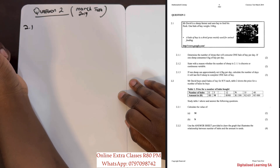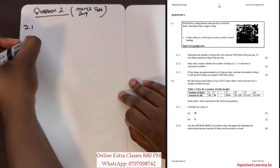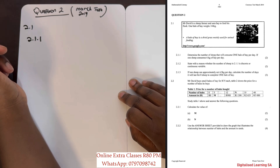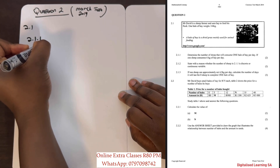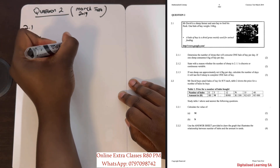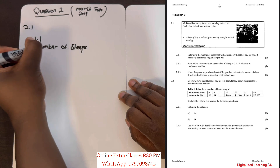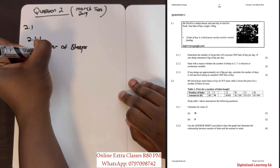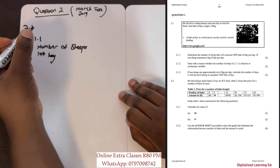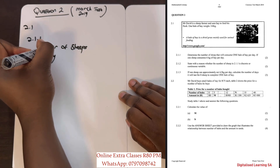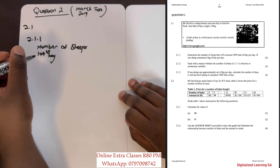We are given a scenario where Mr. David is a sheep farmer who uses hay to feed his flock, and one bale of hay weighs 144 kilograms. For question 2.1.1, we need to determine the number of sheep that will consume one bale of hay per day, given that one sheep consumes 6 kilograms of hay per day.